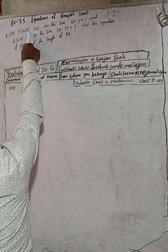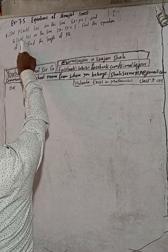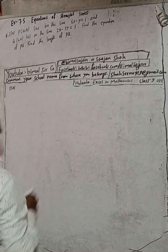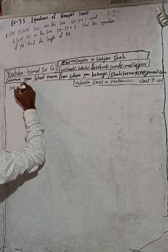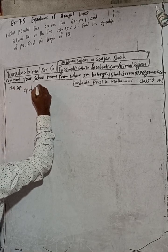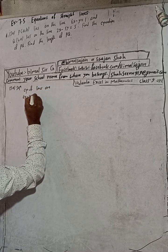Hi class 9 and 10 students, welcome back to Bimal Sarji's YouTube channel. This is question number 13a, exercise 7.5, equations of straight lines, class 9 optional mathematics. Point P(a, b) lies on the line 6x minus y equals 1, and Q(b, a) lies on the line 2x minus 5y equals 5. We need to find the equation of PQ and the length of PQ.